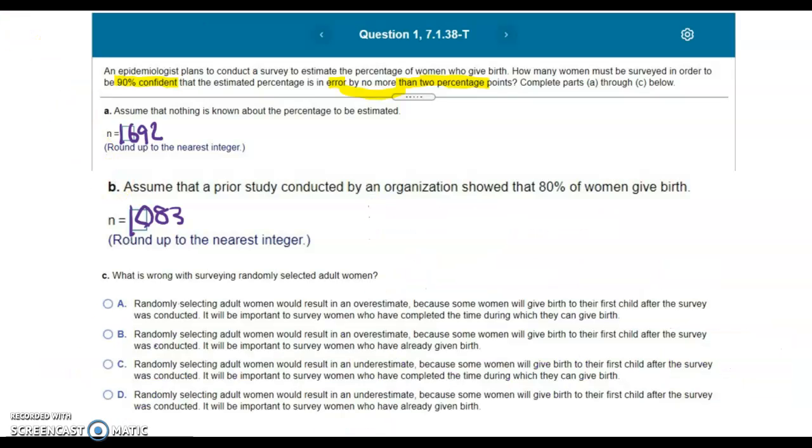Lastly, you're asked what is wrong with surveying randomly selected adult women? Well, if you're randomly selecting adult women, that would result in an underestimate because some women will give birth to their first child after the survey is conducted.